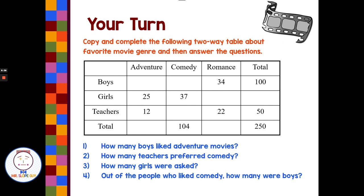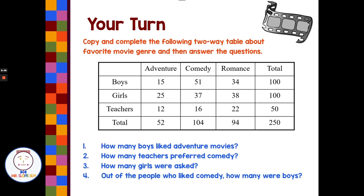Now complete this table and answer the questions — pause the video here, then come back. Your completed table should look like this. How many boys liked adventure movies? Boys and adventure: 15. How many teachers preferred comedy? That would be 16. How many girls were asked? 100. Out of the people who liked comedy, how many were boys? This is a conditional question — the condition is 'out of people who like comedy,' so we only look at that column. The answer is 51 out of 104.